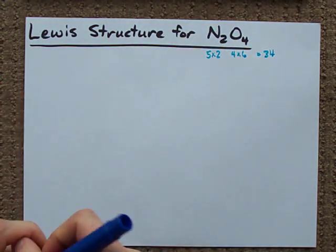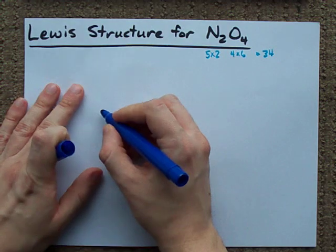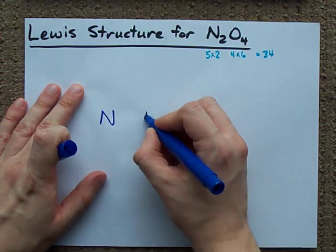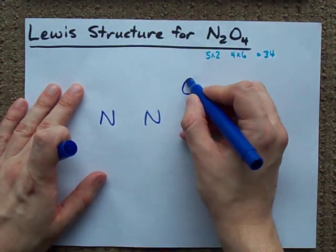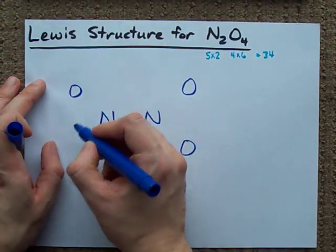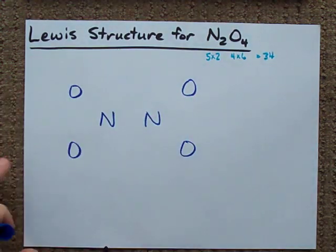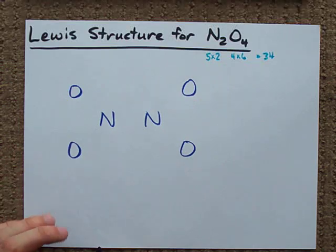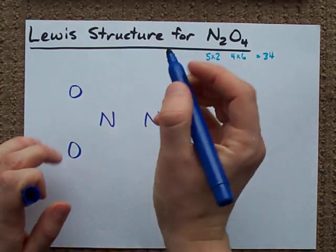The structure of N2O4 has the least electronegative atoms in the center. Put your two N's in the center and surround it with your O's. Alright, step 1, make sure all your atoms are bonded together.